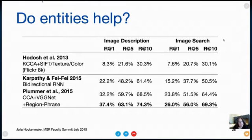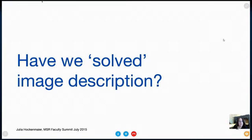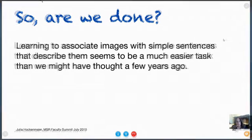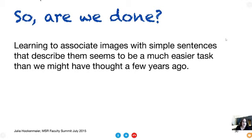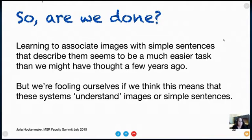Does this mean we've actually solved image description? We're really doing surprisingly well. But I really think that learning to associate images with simple sentences is a much, much easier task than any of us would have thought a few years ago. A lot of this has to do with how well vision works nowadays — these deep learning-based features work really well. But I think it's important to remember that we're really fooling ourselves if we think that these systems actually understand images or simple sentences.